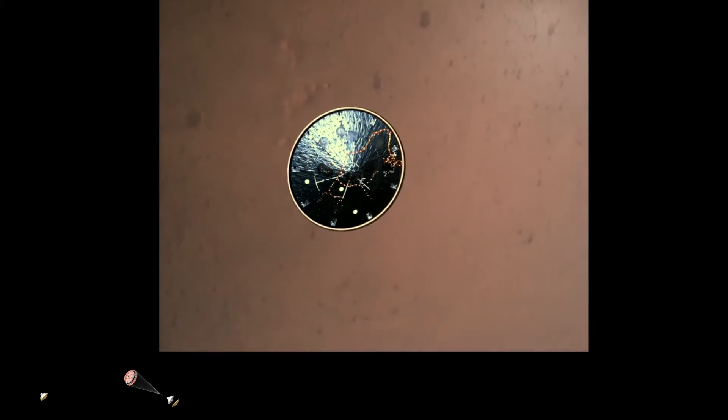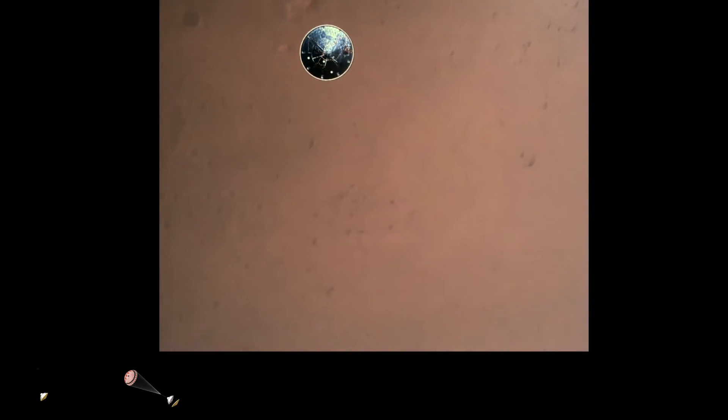Heat shield set. Perseverance has now slowed to subsonic speeds, and the heat shield has been separated. This allows both the radar and the cameras to get their first look at the surface. Current velocity is 145 meters per second, at an altitude of about 9.5 kilometers above the surface.